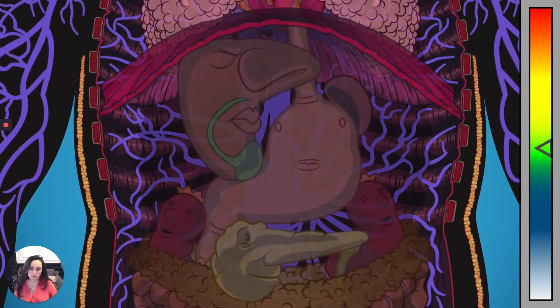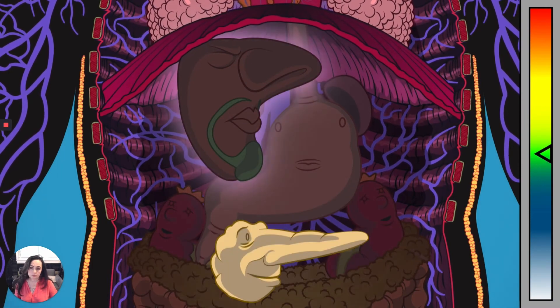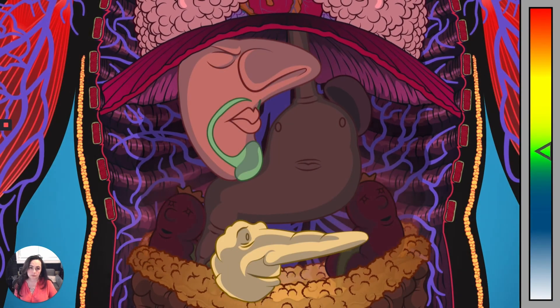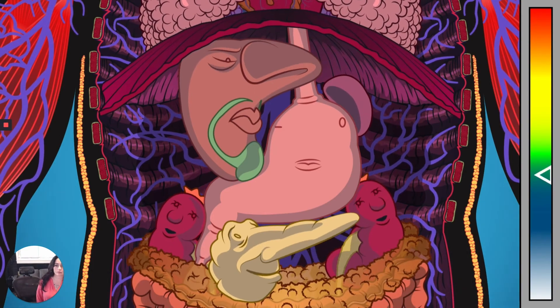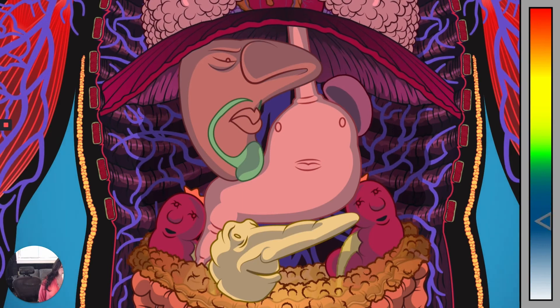But diabetes involves more than just what's in your bloodstream. It's a communication disorder that involves the pancreas, liver, muscles, fat, kidneys, and other organs and tissues. In a healthy person, they work together to keep blood sugar levels in a healthy range.